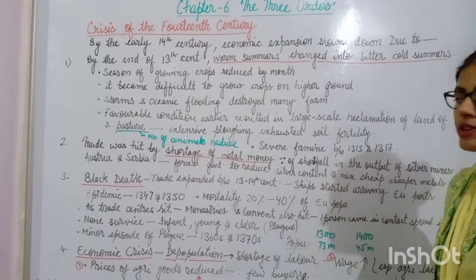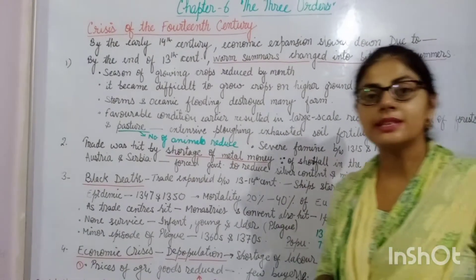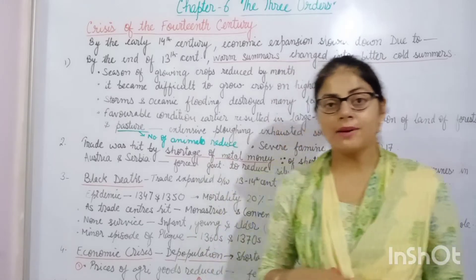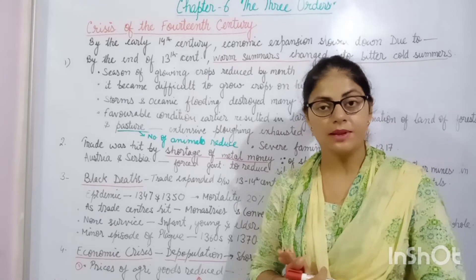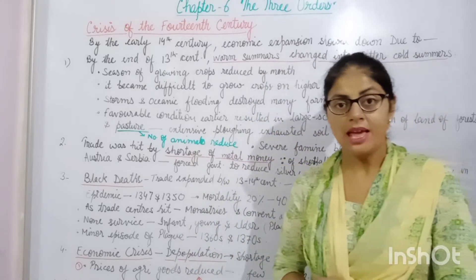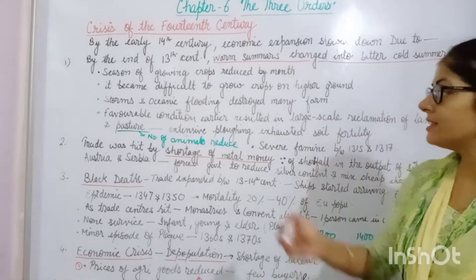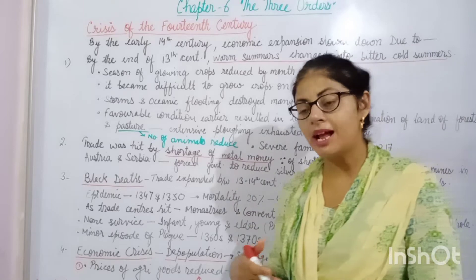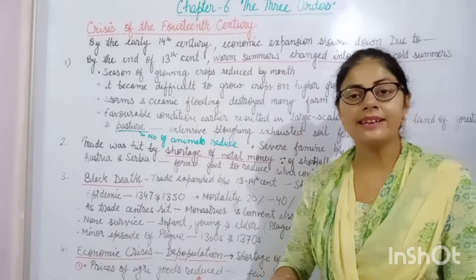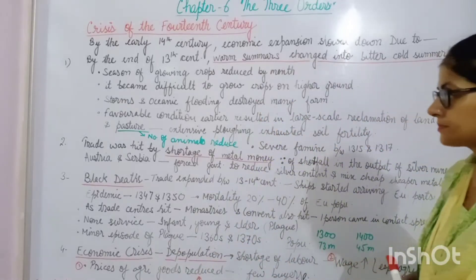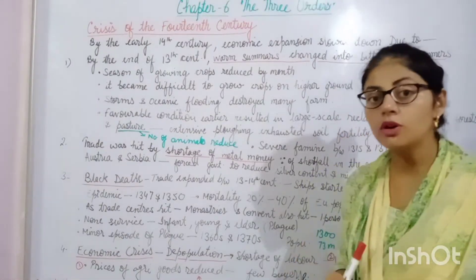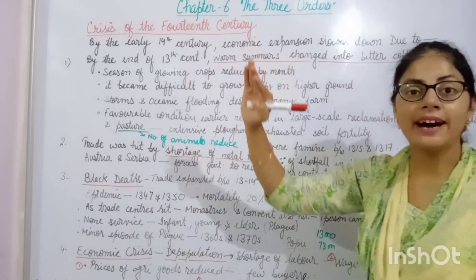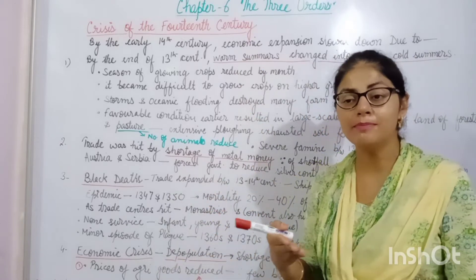By the end of the 13th century, warm summers changed into bitter cold summers. Because of this change in climatic condition, the season for growing crops reduced, as the land got covered with snow for a larger time period. It also became difficult to grow crops at a higher altitude because the temperature reduced more at higher elevations.